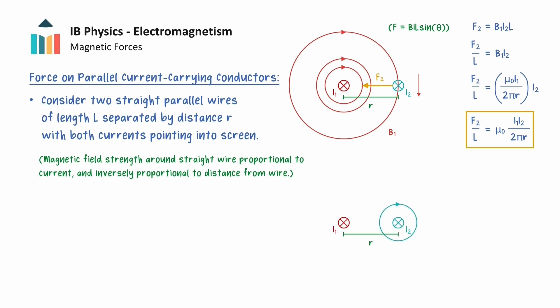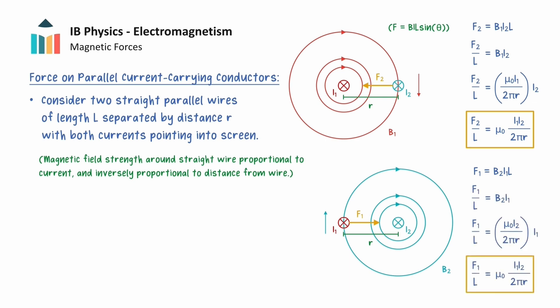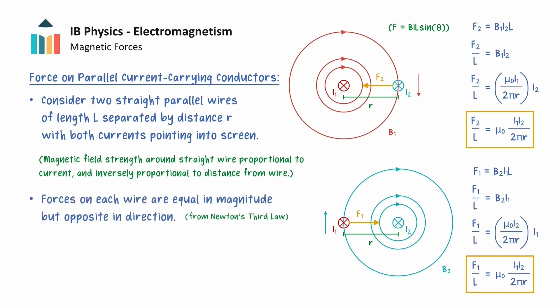Similarly, wire 2 must also produce its own magnetic field since it is a current-carrying wire, and this field will point upwards at the position of wire 1. Therefore, wire 1 must also experience a magnetic force due to wire 2. From the right-hand slap rule, we see that the force on wire 1 acts to the right, towards wire 2. The force per unit length on wire 1 is the same as that on wire 2, showing that the forces on each wire are equal in magnitude but opposite in direction, even if both wires carry different currents. When the currents are in the same direction, the forces are attractive and act toward each other.